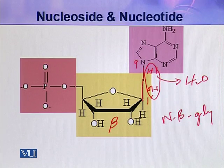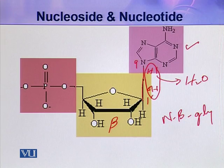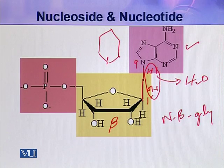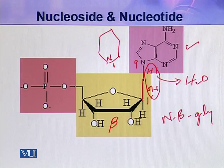For all purines, if the nitrogenous base is a purine, it will be attached from its nitrogen-9 to the one-prime carbon of the pentose. And if the nitrogenous base is a pyrimidine — pyrimidine has this structure — the relevant nitrogen is number one. So a pyrimidine is attached from nitrogen-1 to the one-prime carbon of the pentose.